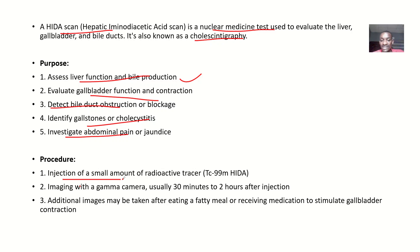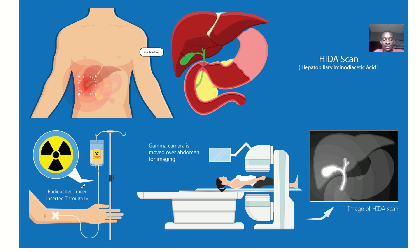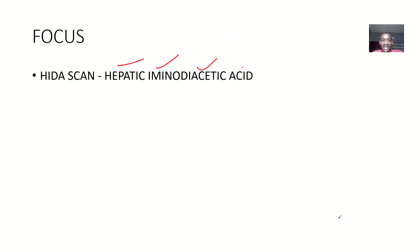For the procedure, a small amount of radioactive tracer — TC-99m HIDA — is injected intravenously. Imaging is performed using a gamma camera moved over the abdomen, usually about 30 minutes to two hours after injection. Additional images may be taken after the patient eats a fatty meal or receives medications to stimulate the gallbladder, allowing assessment of the gallbladder, bile duct, and pancreas.